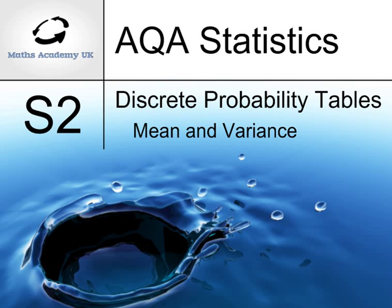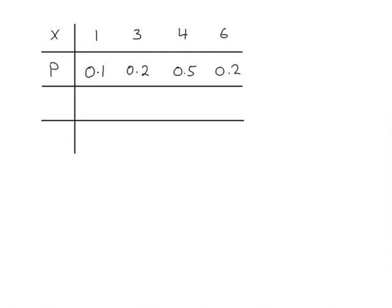We're working out the mean and variance of a discrete probability distribution table. In this table we have the discrete random variable x, and these are the values that it takes, with these probabilities.